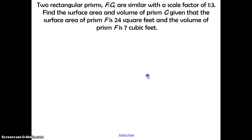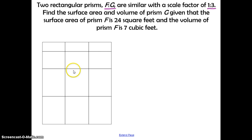This problem is similar to ones you'll have on your test and the SOL. Two rectangular prisms, F and G, are similar with a scale factor of 1 to 3 — so F to G is 1 to 3. We need to find the surface area and volume of prism G, given that the surface area of prism F is 24 square feet and the volume of prism F is 7 cubic feet. Make a chart with columns for prism F and prism G, and rows for the scale factor, surface area, and volume.